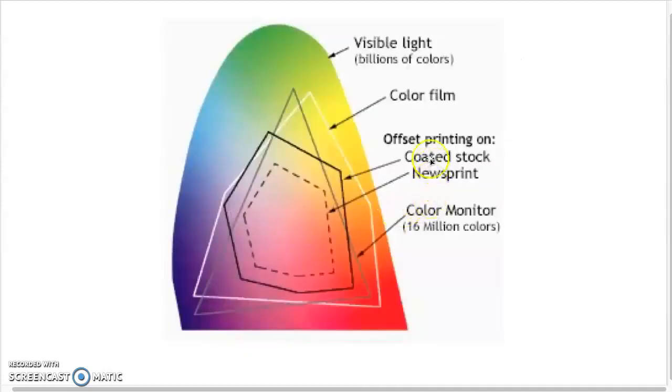Now in the world of color, there's visible color or light, which is billions. Then there's color film, which can hold quite a lot of color in it, but not as much as the visible. And then offset printing is like what they put in these printers. And then a color monitor is even smaller, a little larger than offset printing, but quite a bit smaller than color film. So they all have their limitations at some point.